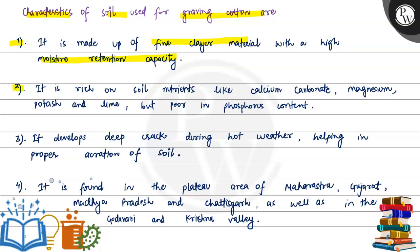The second point is it is rich in soil nutrients like calcium carbonate, magnesium, potassium, and lime, but poor in phosphorus content. The soil nutrients are much more, whereas phosphorus content is much less.